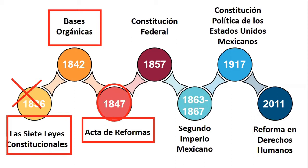Para el año de 1857, los liberales toman el poder y se convoca un congreso constituyente, signando la Constitución Federal del año de 1857. Algunas cuestiones importantes que establecía esta constitución son la libertad de expresión, la prohibición de fueros, la prohibición de penas por mutilación, azotes, tormento, y la prohibición de penas de muerte, salvo en casos de traidores a la patria, salteadores de camino, incendiarios y homicidas con agravantes. Se destacan también los antecedentes de las leyes de reforma y su establecimiento dentro de la Constitución Mexicana de 1857.